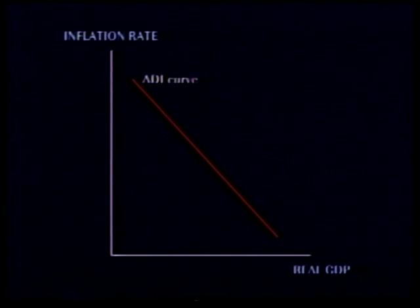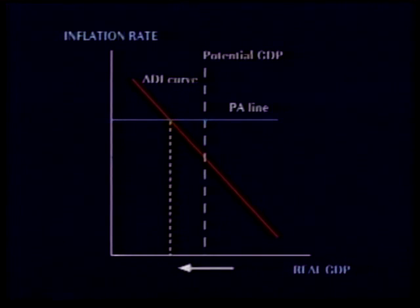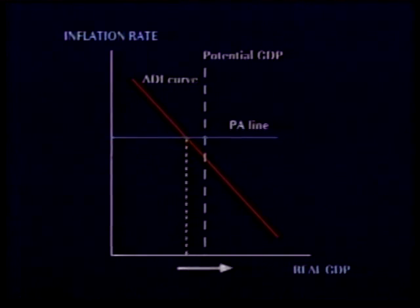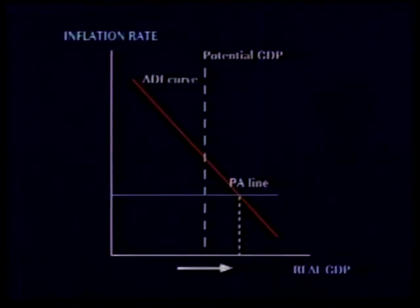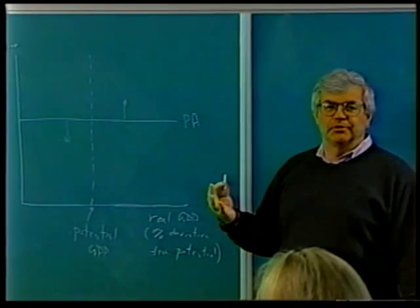Let's now add another element to this picture, the price adjustment line, or PA line. The PA line is horizontal because the same behavior occurs no matter what the level of real GDP. The PA line tells us what the level of inflation is. Thus, looking at the intersection of the PA line and the ADI curve tells us the level of real GDP at any given time.